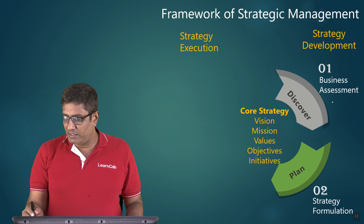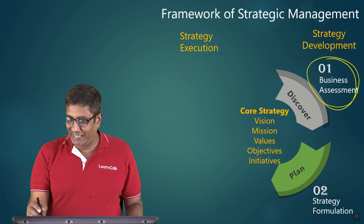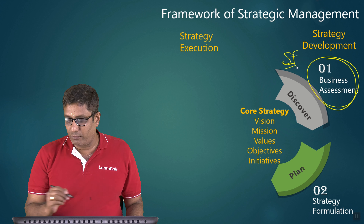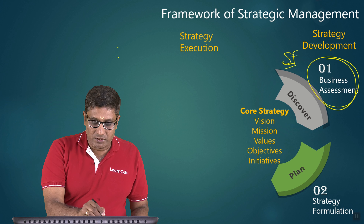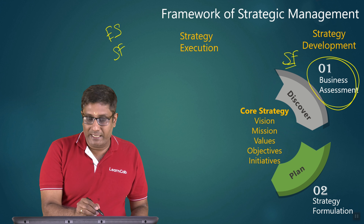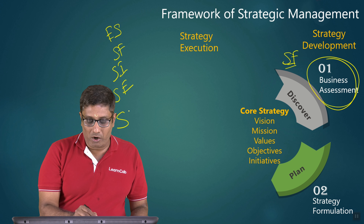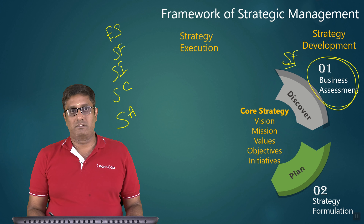First thing in strategic management is business assessment. The framework of strategic management involves: environmental scanning, strategic formulation, strategic implementation, strategic control, and strategic audit. These are the main five structures.